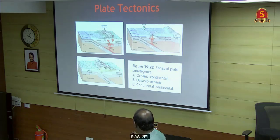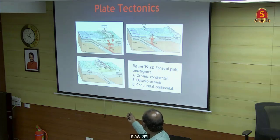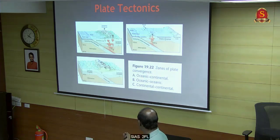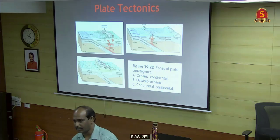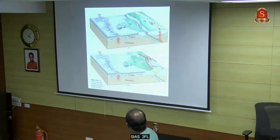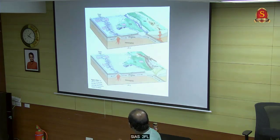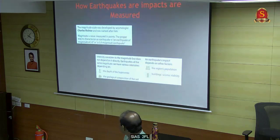In continental-continental collision, when ocean and continental collision occurs, the ocean will go down. When continents collide, hills are formed - that is why our Himalayas formed. The Indian plate moved and hit Asia, causing the Himalayas to rise.